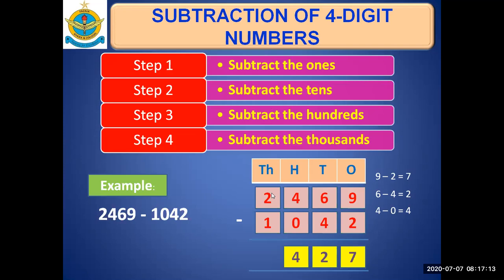And lastly, we subtract the thousands: 2 minus 1, which is 1, and we will write it in thousands column. So, we'll get the difference of 1427.